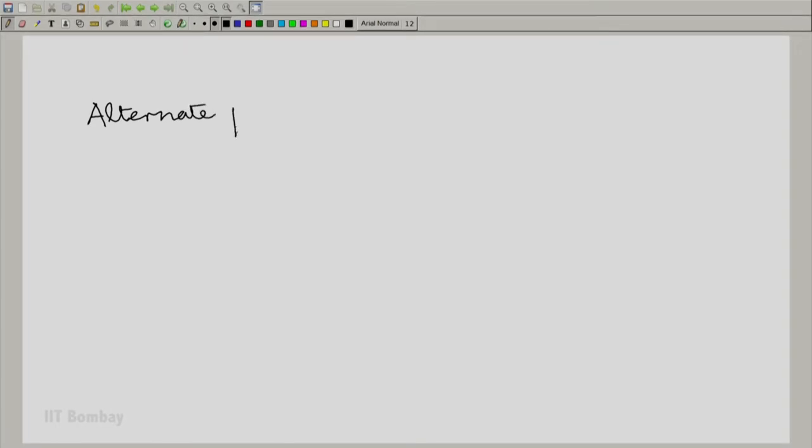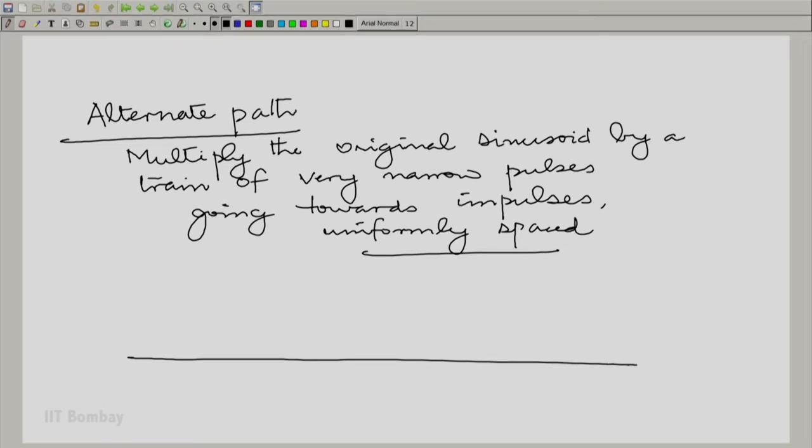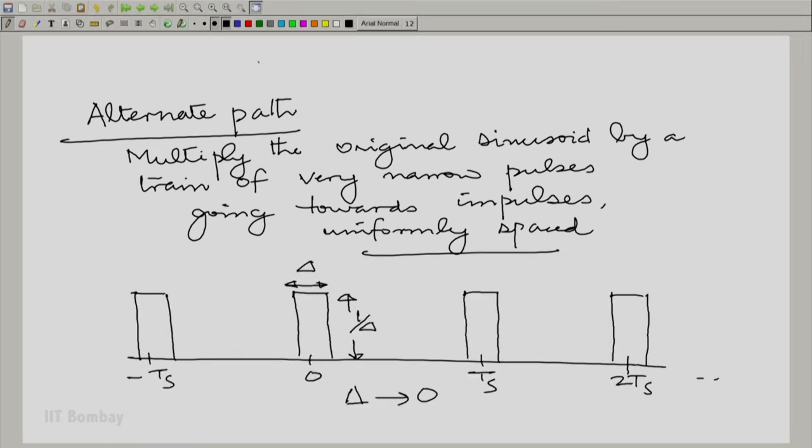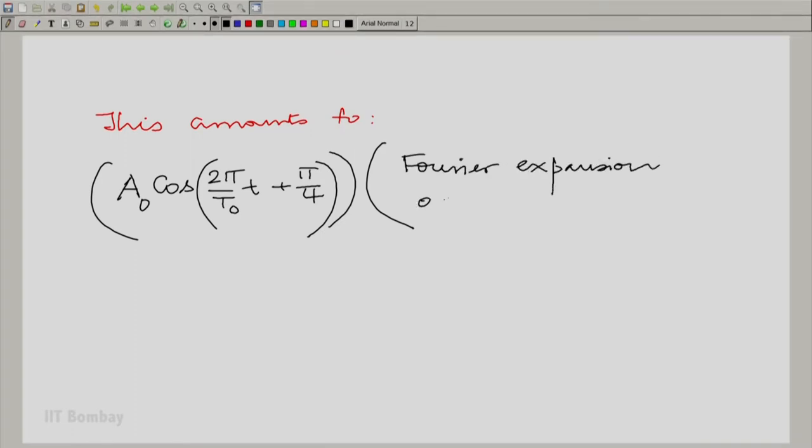So there we are. What we said was, the alternate path is multiply the original sinusoid by a train of very narrow pulses. Remember, these were going towards impulses, which were uniformly spaced. We discussed this in session 8. And what did we see? We saw that essentially, this means that you are going to multiply the original sinusoid by the Fourier expansion of this periodic waveform. The waveform is periodic with period T_s. We worked out the Fourier expansion of this periodic waveform in session 8. And we started taking limits.